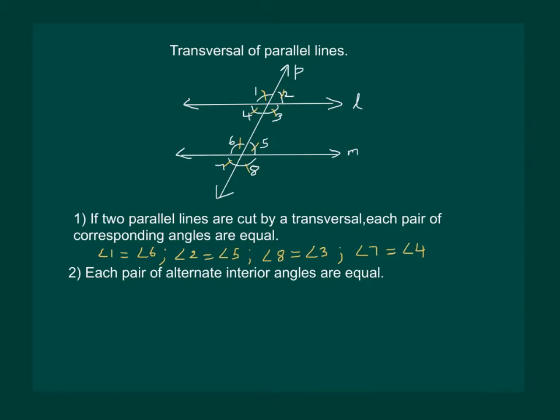Next rule is that each pair of alternate interior angles are equal and that would mean that angle 3 and angle 6 are equal, also angle 4 and angle 5 are equal.